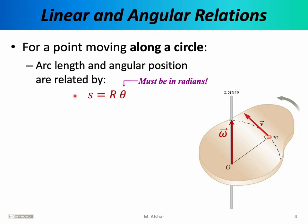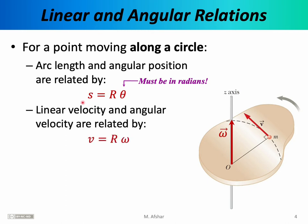If we differentiate both sides of S = R·theta, we get the relationship we want. The derivative of S with respect to t is V, and the derivative of theta with respect to t is omega. This tells us that the linear speed of a particular atom equals the radius of that atom times the angular velocity of the object. Differentiating the left side gives speed — how fast the object moves along the arc. On the right side, R is a constant so it comes out of the derivative, and d(theta)/dt is simply omega.